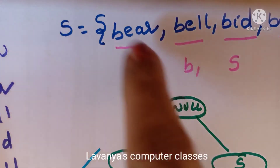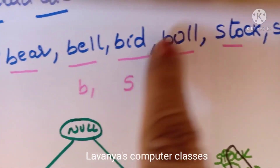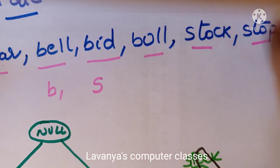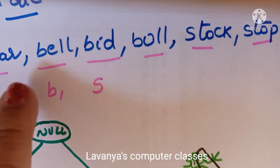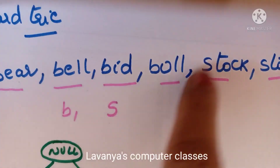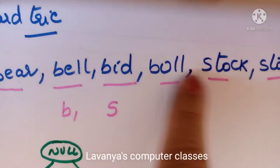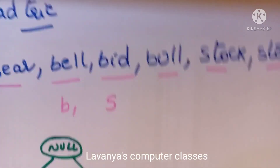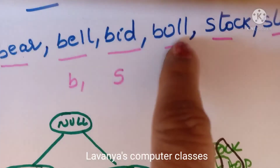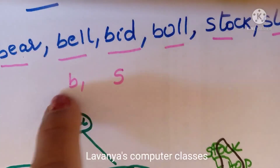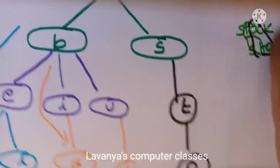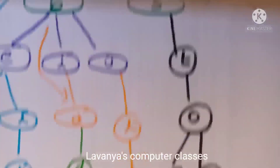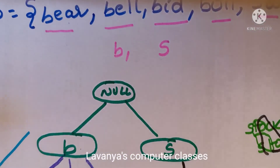This is the standard trie for the set of strings: bear, bell, bid, bull, stock, stop. The first character gives 2 pointers: B and S. From B, the second characters are E, I, U — three different pointers. From S, the second character is T for both strings.